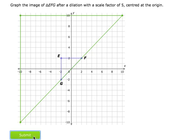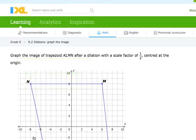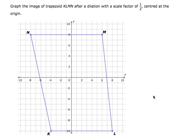Looking here, that looks pretty good. I'm going to submit it because I think I got it right — and I did. So I'm going to do this again with the next one, except in this one the scale factor is 1 half. If it's a scale factor that's a fraction less than 1, my new figure is going to be smaller than the original — half as big, with all the sides half as long and all the coordinates half as big.